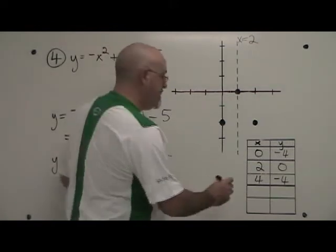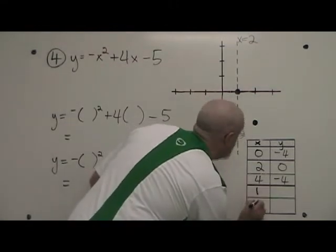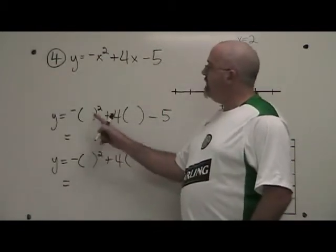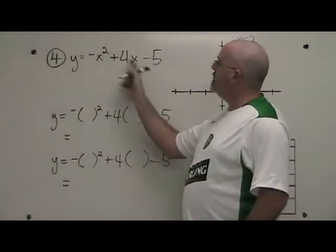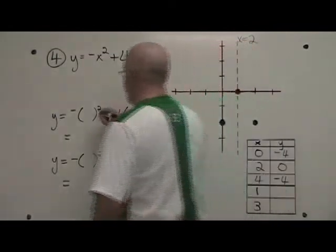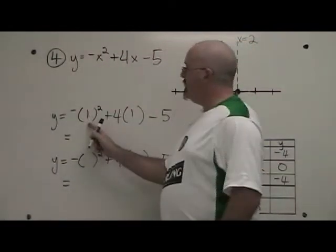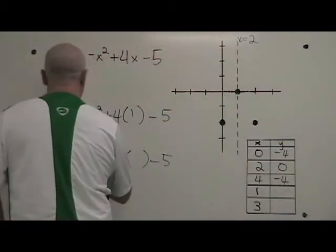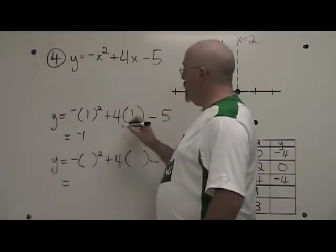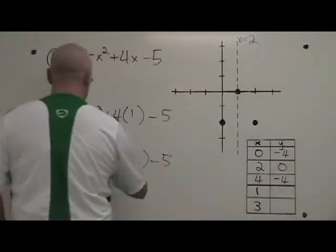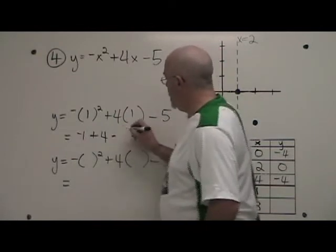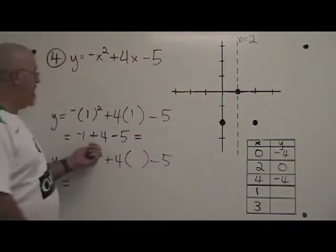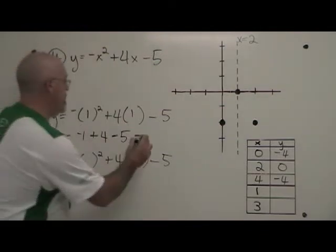We are going to plug in x equals 1 and x equals 3. If x equals 1, I place a 1 into the position of both x's in the equation. 1 squared is 1, and then I plug the negative sign, so this becomes negative 1. Plus 4 times 1 minus 5. Negative 1 plus 4 minus 5 is equal to negative 2.